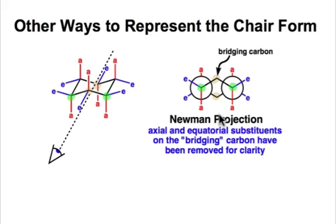What you can see in the Newman projection are the average plane with the axial substituents lying above and below that plane, and then the equatorial substituents along the perimeter.